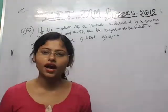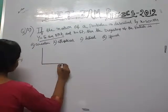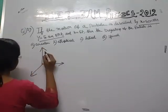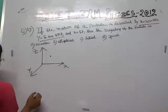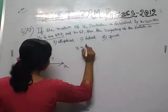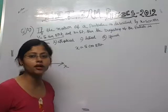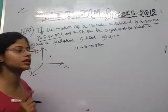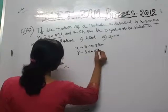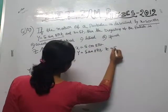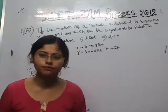The x, y, and z coordinates of the particle are given. The x coordinate is 5 cos 8π t, the y coordinate is 5 sin 8π t, and z equals to 5t.